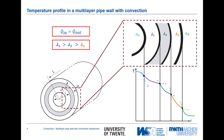We can recall what we learned in the lecture on the multi-layer pipe wall. Due to the changing area, there is a decrease of the temperature gradient because Q is constant. From Fourier's law with constant material properties, an increasing area leads to a decreasing gradient. Between layers, there can be a jump in the gradient depending on the thermal properties of the different materials.